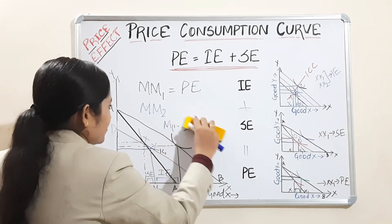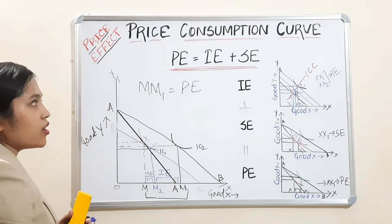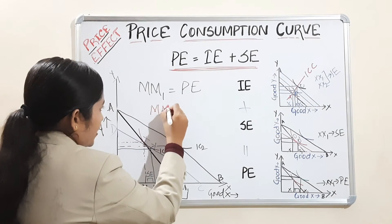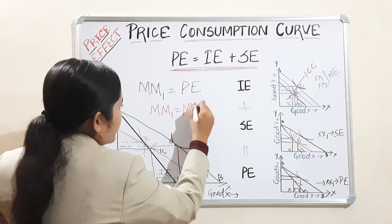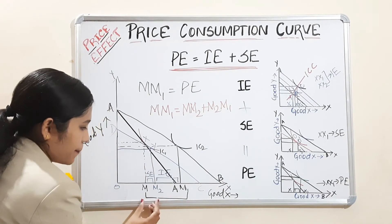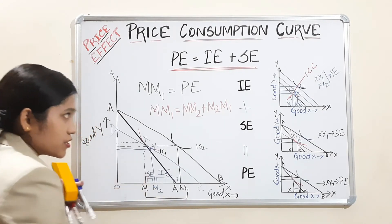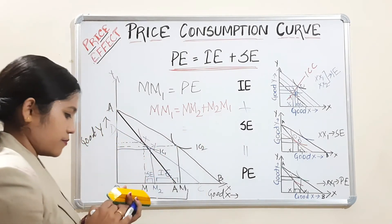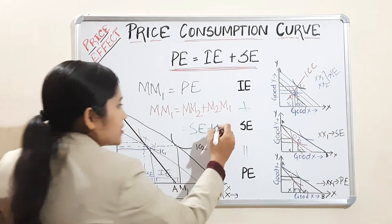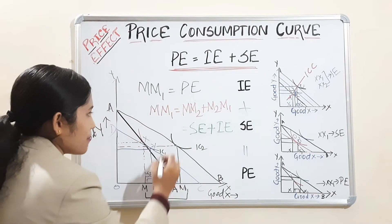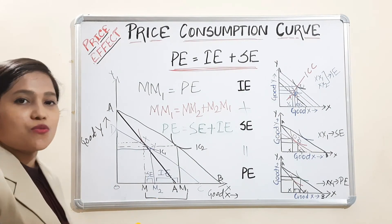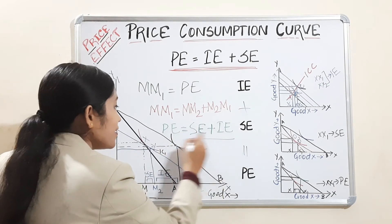So we know M-M1 equals the price effect. Now, M-M1 equals M-M2 plus M2-M1. Here, M-M2 is the substitution effect, M2-M1 is the income effect, and M-M1 is the price effect. This proves that price effect equals substitution effect plus income effect.